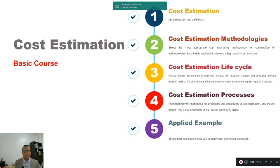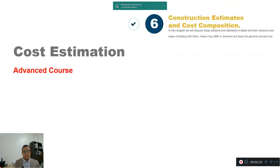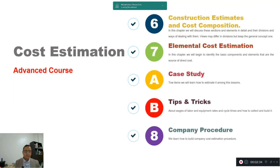In the second course it will be cost estimation advanced course started from construction estimates and cost composition. The composition of each item will learn how to differentiate between indirect cost and direct cost.